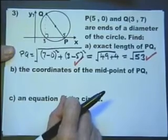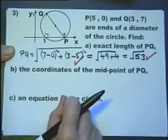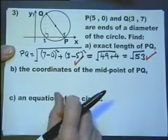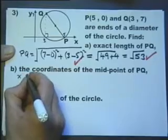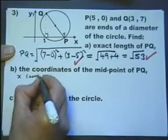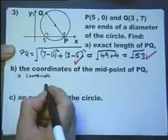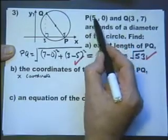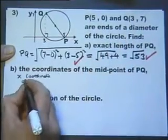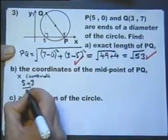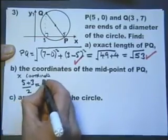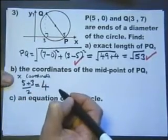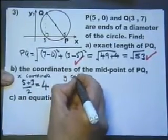Part B: Find the coordinates of the midpoint of PQ. Let's look for the x coordinate first. For the midpoint, you take the two x coordinates, add them together, and divide by 2. 8 divided by 2 is 4—that will be the x coordinate of the midpoint of PQ. Now the y coordinate.